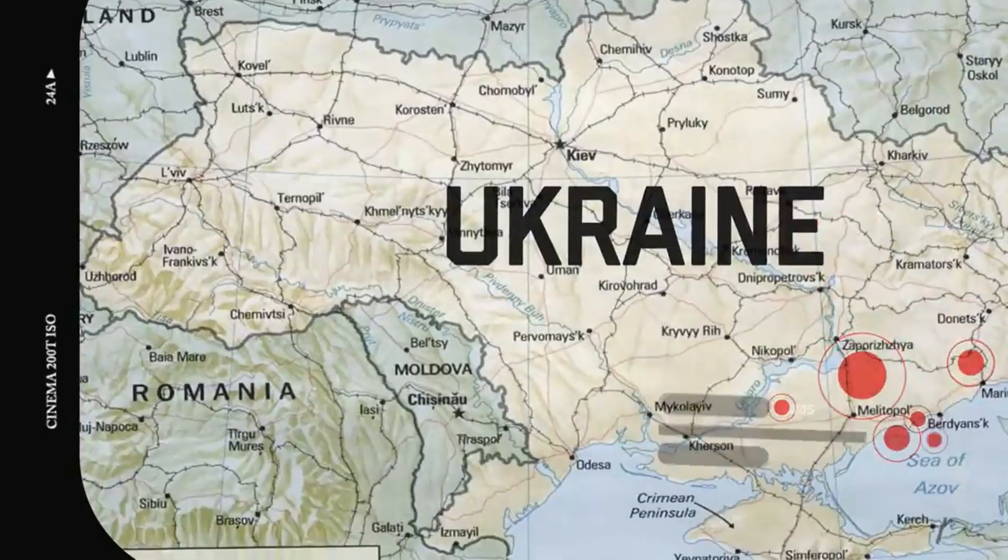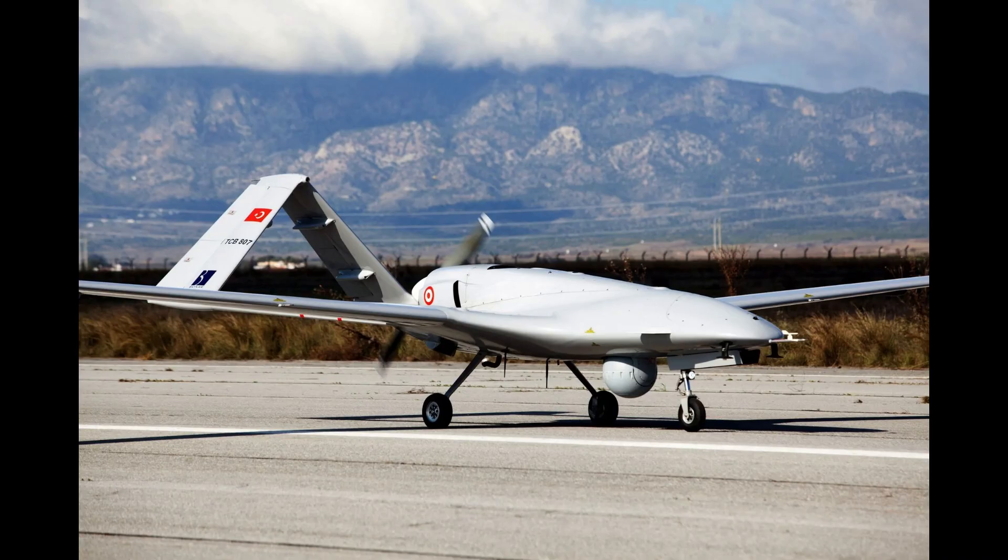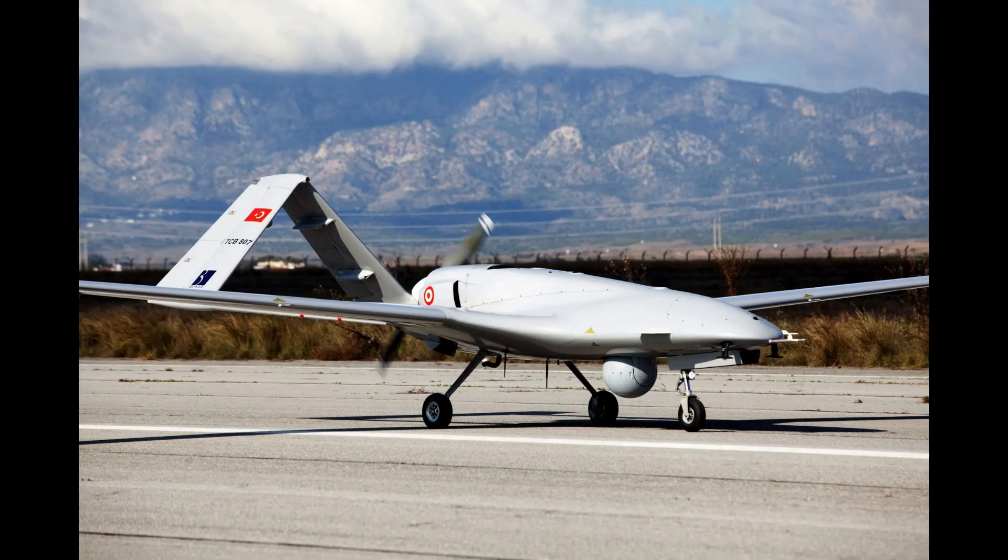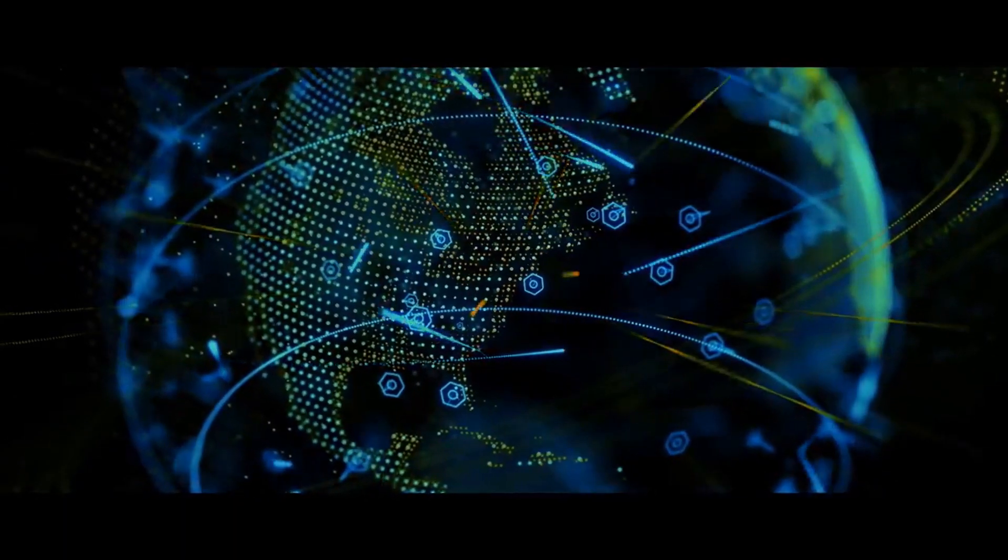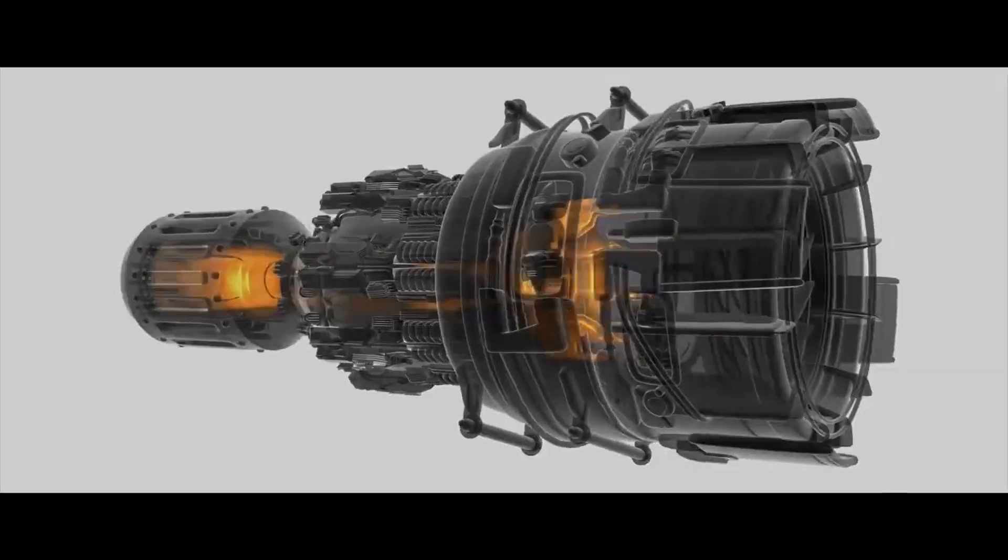Already, Ukraine has been using the Turkish-made TB2 drone, which can take off, land, and cruise autonomously, although it still relies on a human operator to decide when to drop the laser-guided bombs it carries. The drone can also use lasers to guide artillery strikes.